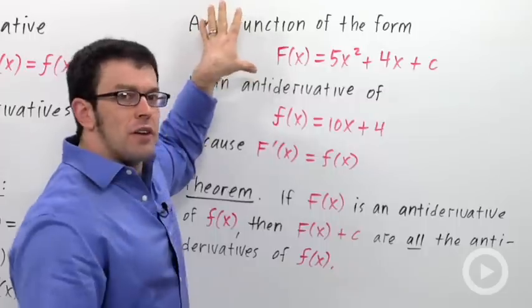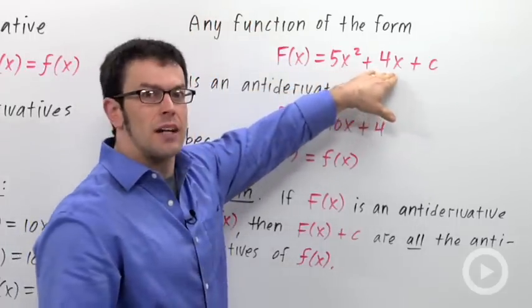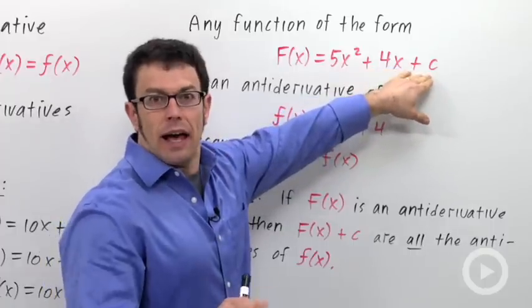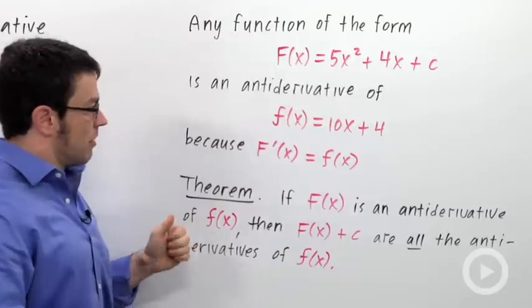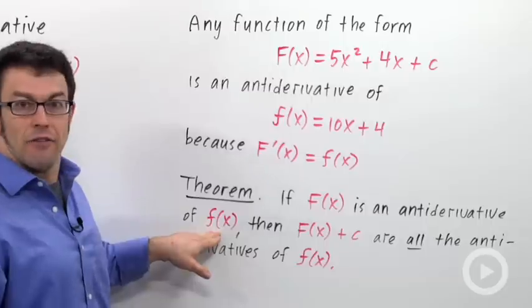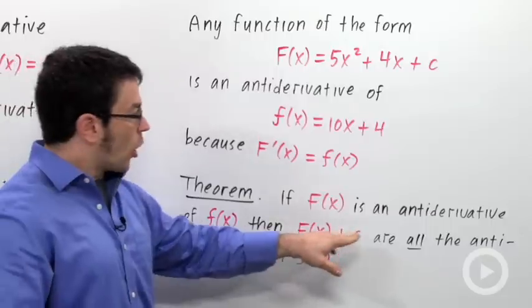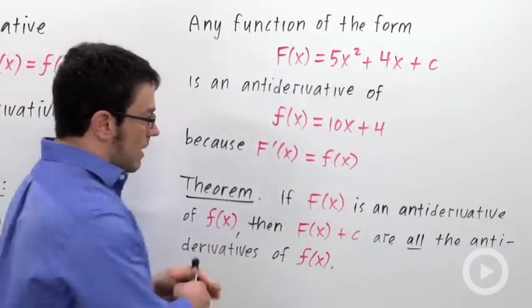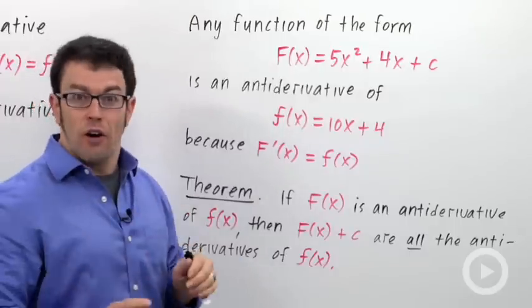And the important thing to recognize here is once I came up with that first answer, 5x squared plus 4x, any constant I wanted to add, that would still give me an antiderivative. And that leads me to this important theorem. If capital F of x is an antiderivative of little f of x, then capital F of x plus c are all the antiderivatives of little f of x. That means that any function of this form is going to be an antiderivative, and that's all there are.